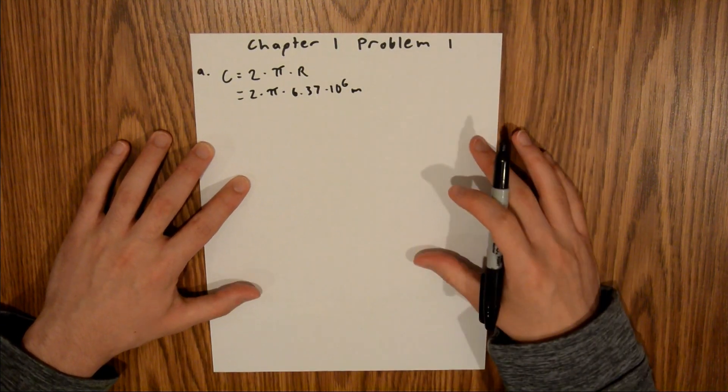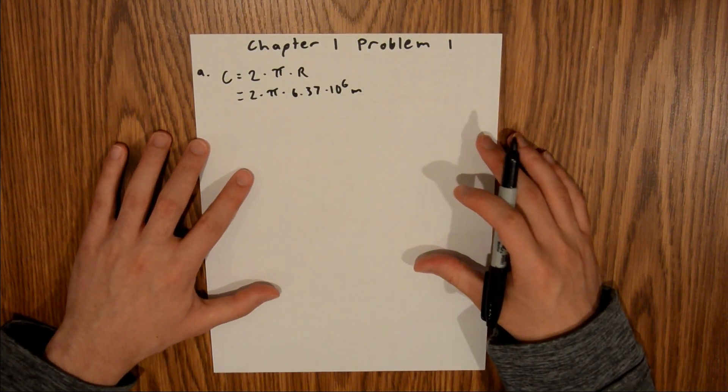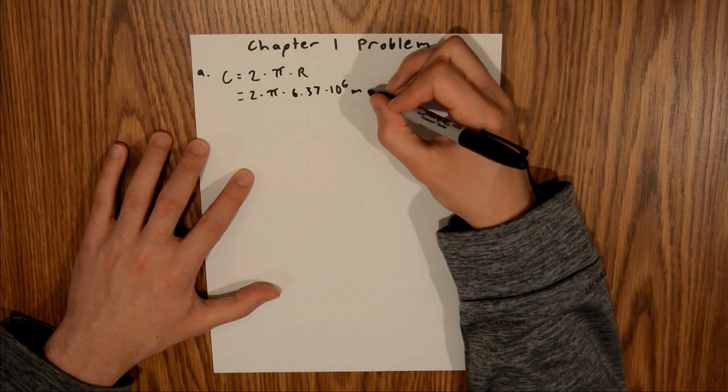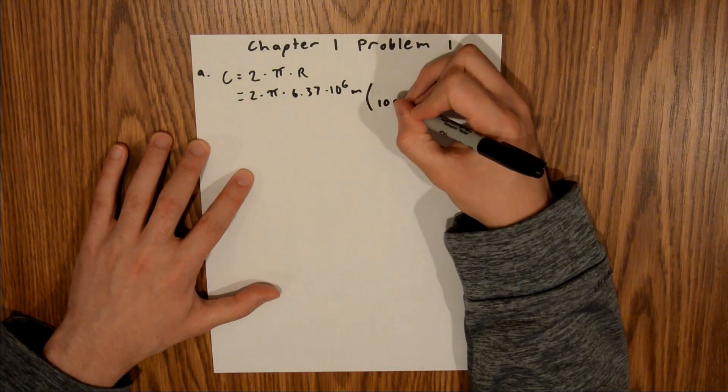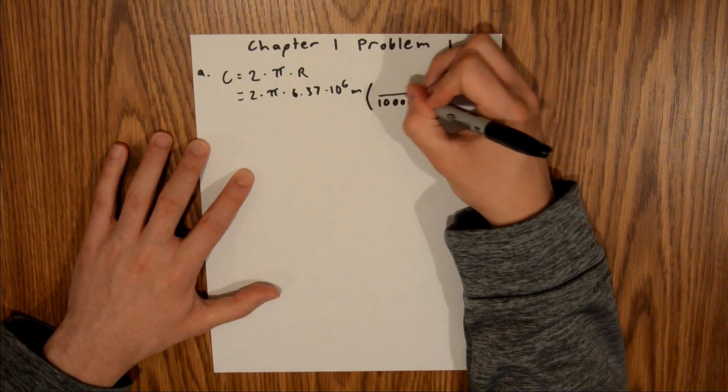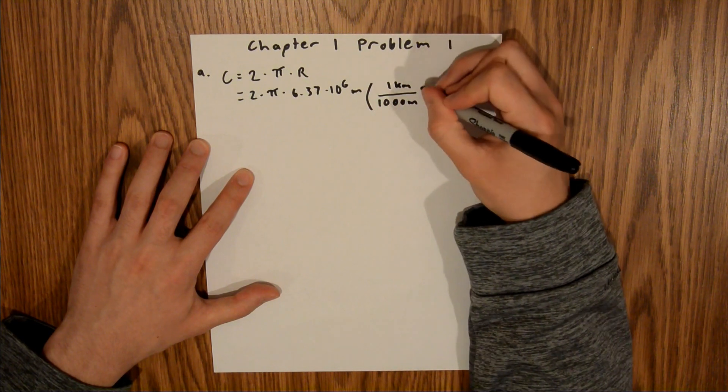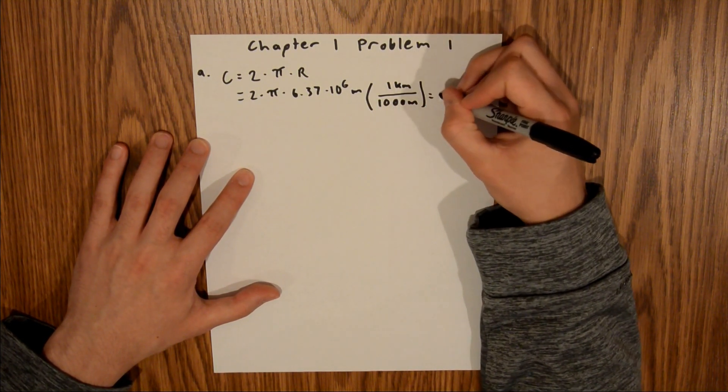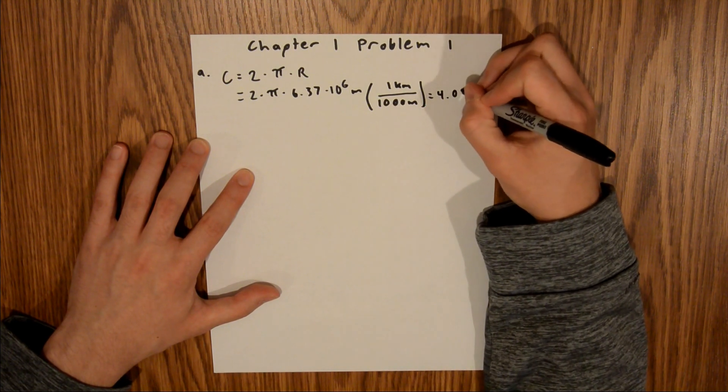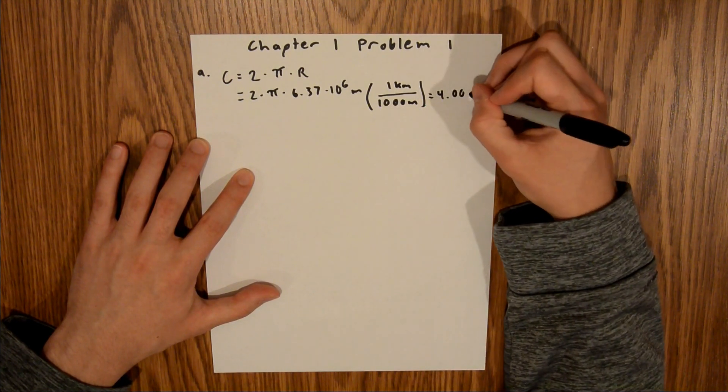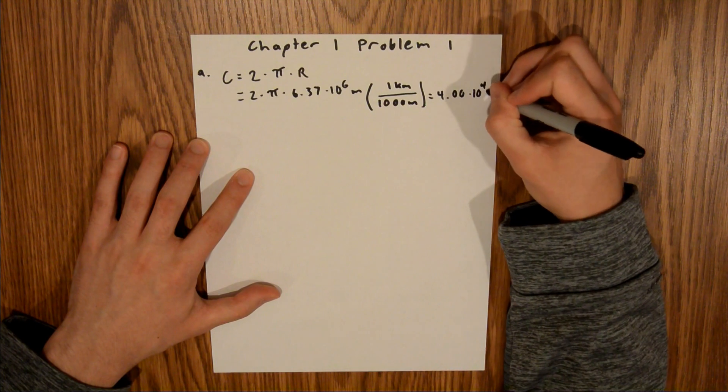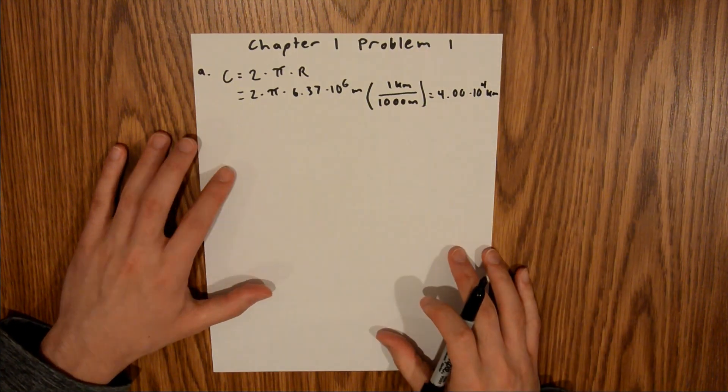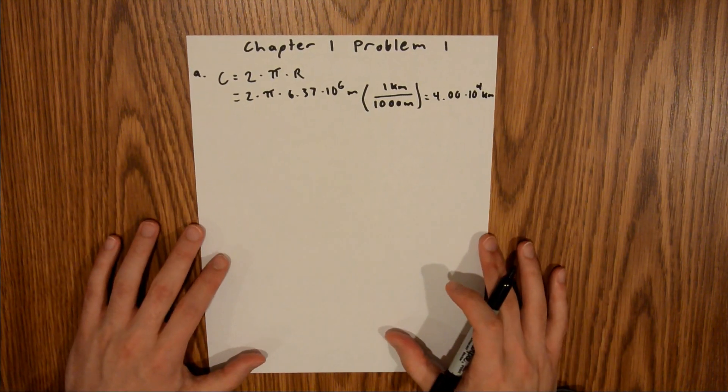But the problem asks for the circumference in kilometers, and so what we're going to do is do a unit conversion, and we know that there are 1,000 meters in 1 kilometer, and if you plug that into your calculator, you should get that the circumference is 4.00 times 10 to the 4th kilometers. And so that's about it for Part A.